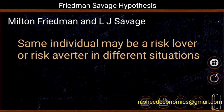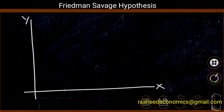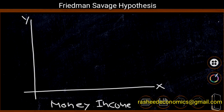We can explain this concept using a diagram. On the X-axis, we have the money income of the consumer, and on the Y-axis, we have the marginal utility of money.